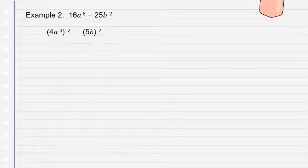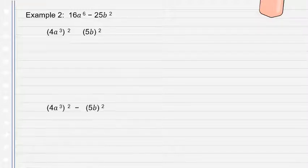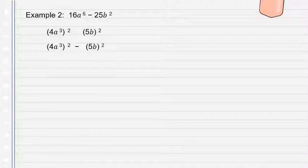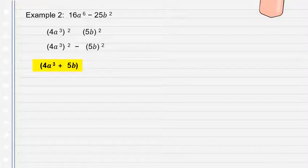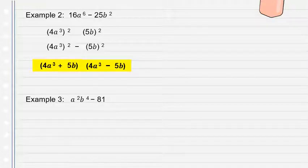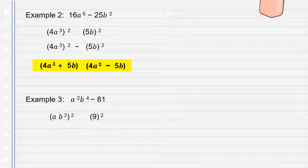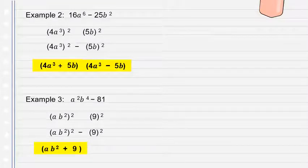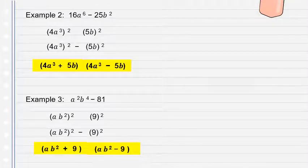Example 2: 16a to the 6th minus 25b squared. Rewrite as (4a cubed) raised to 2 minus (5b) raised to 2. The factored form is (4a cubed plus 5b)(4a cubed minus 5b). Example 3: a squared b to the 4th minus 81. Rewrite as (ab squared) raised to 2 minus 9 raised to 2. The factored form is (ab squared plus 9)(ab squared minus 9).